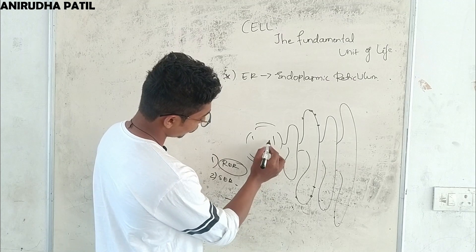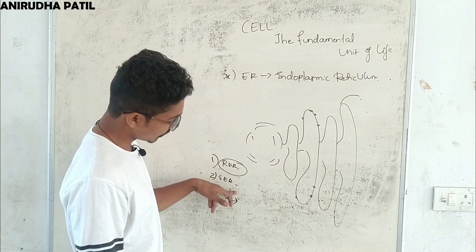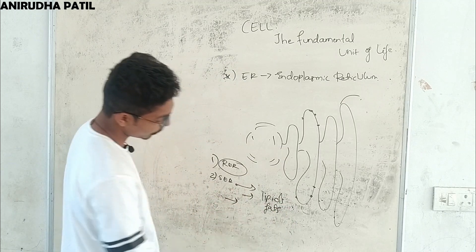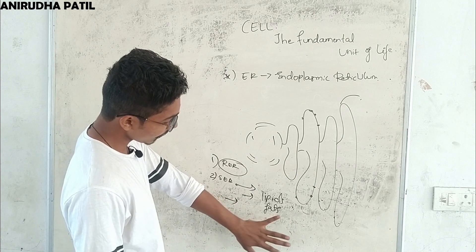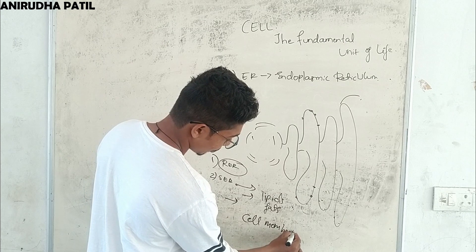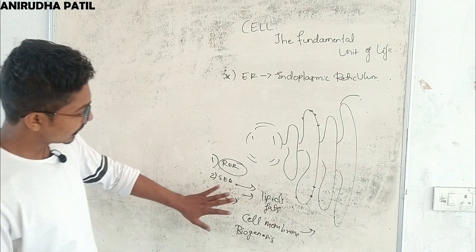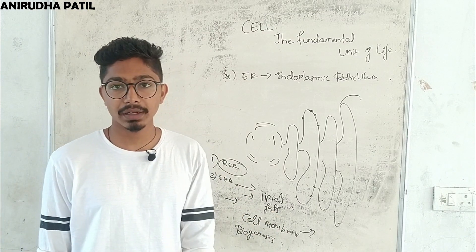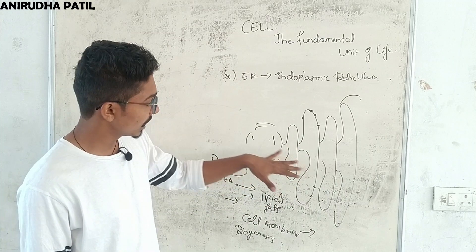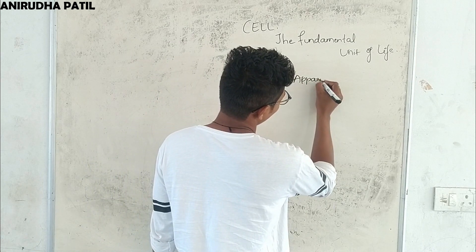The endoplasmic reticulum helps in transport of materials from the nucleus to other parts of the cell. The smooth endoplasmic reticulum helps in the formation of lipids and fats, which may help form the cell membrane — a process known as biogenesis. The smooth ER also sometimes helps in detoxifying drugs.